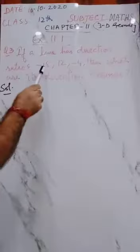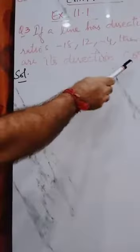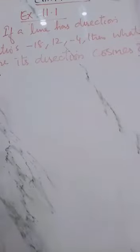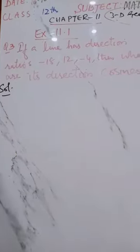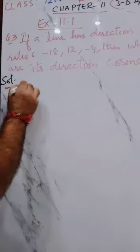Here we have given direction ratios minus 18, 12, and minus 4. Then we have to find its direction cosines. Simple, direction ratios given and direction cosines to find. So we have to know that we have to find solutions.